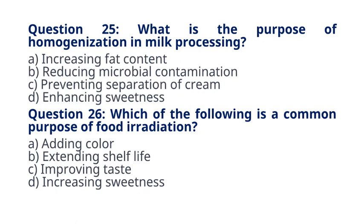Question 26. Which of the following is a common purpose of food irradiation? A. Adding color. B. Extending shelf life. C. Improving taste. D. Increasing sweetness. The correct answer to question 26 is option B. Extending shelf life. Explanation. Food irradiation is used to extend shelf life by reducing microbial contamination and slowing down the ripening process.